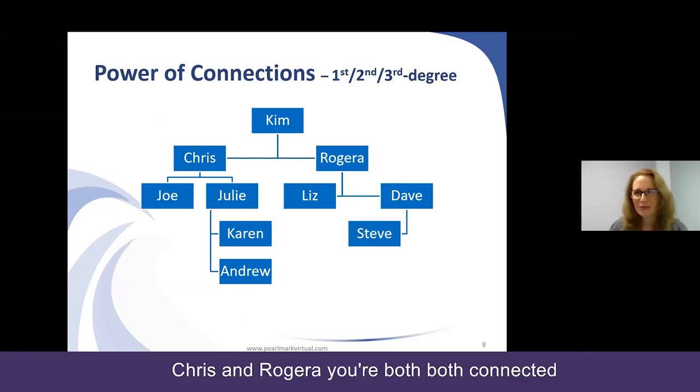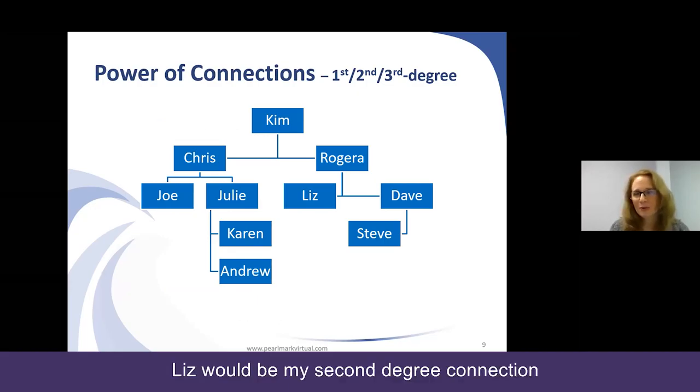So Chris and Rogera, we're both connected. But if Rogera is connected to Liz, Liz would be my second degree connection. And Dave is also a second degree, and Steve would be my third degree connection.